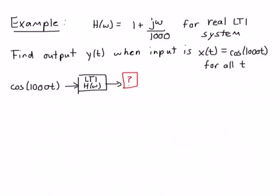So based on the discussion on the previous page, we can easily write the equation for the output of this system. So we know it's going to be the magnitude evaluated at the frequency of the input, so it's |H(1000)| cos(1000t + ∠H(1000)), plus the phase evaluated at a thousand.